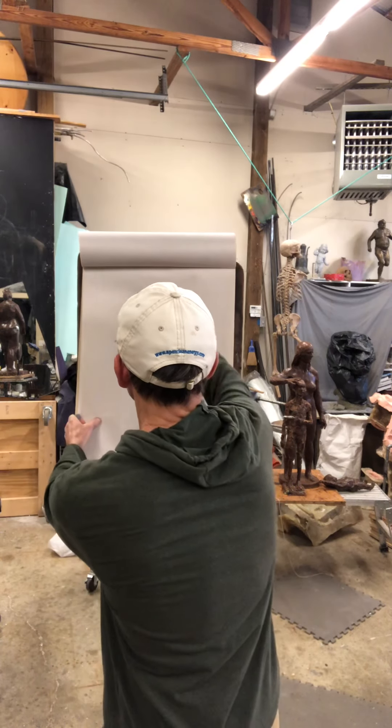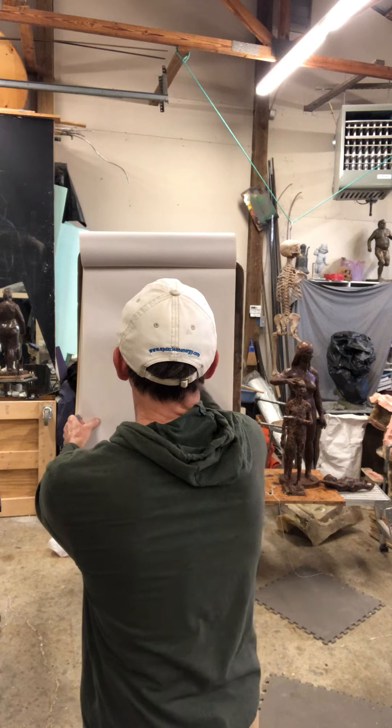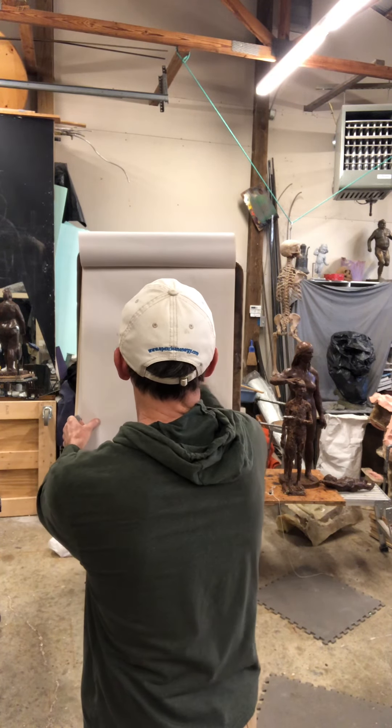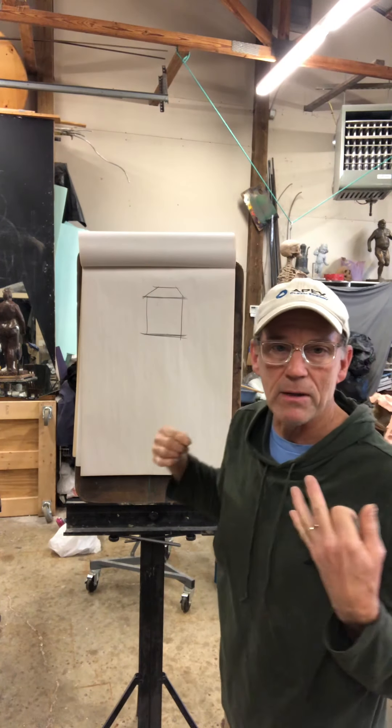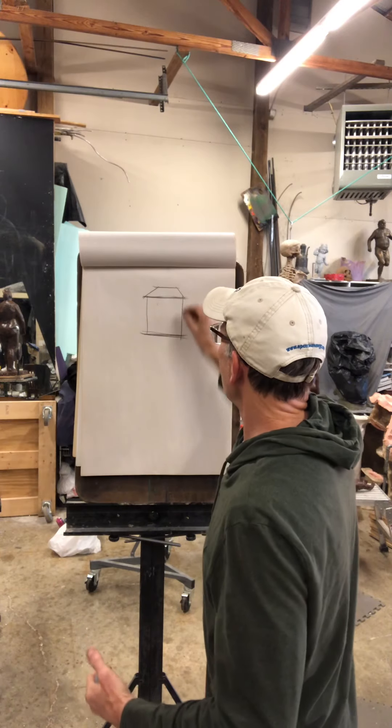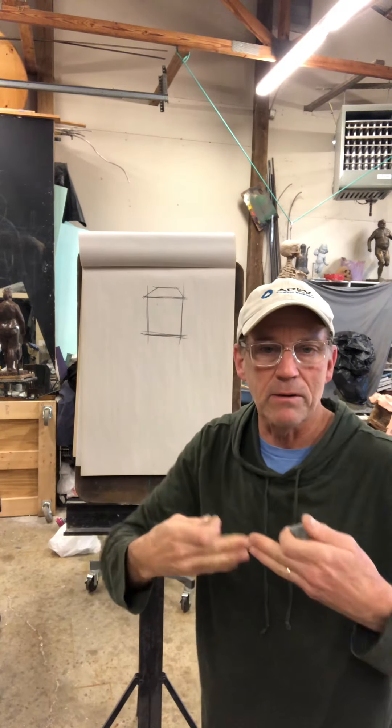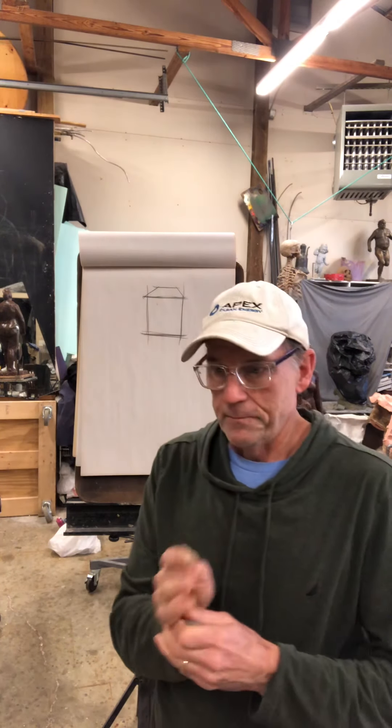We'll start with one point. The rule of one-point perspective says that when you're working in one point, one plane of the object has to be parallel to our picture plane. If we think about the rectangular solid being the mother form of perspective, one of those planes always has to stay parallel to our field of vision, which means that one of those sides has to have two sets of parallel lines.